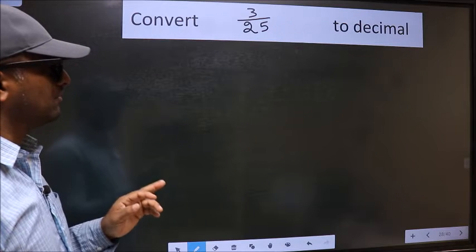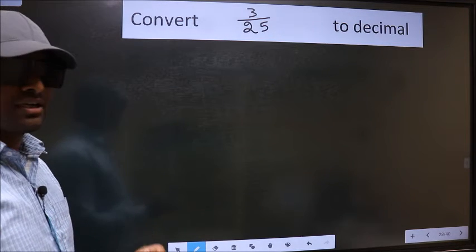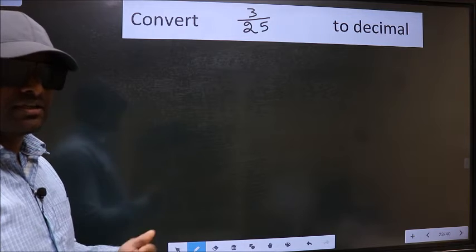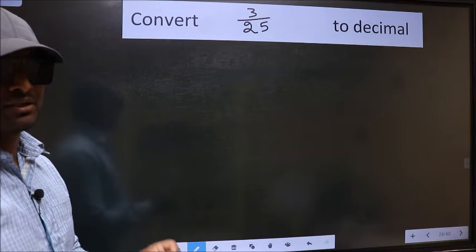Convert 3 by 25 to decimal. To convert to decimal, we have to divide it. To divide,